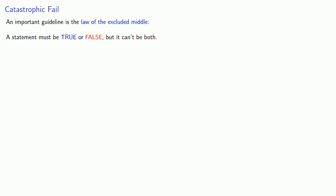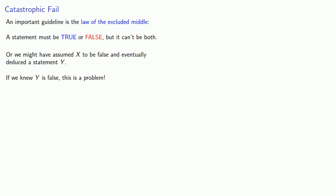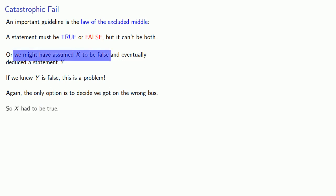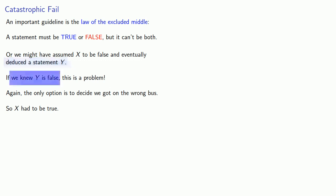Note that we didn't have to assume x to be true. We might have assumed x to be false and eventually deduced a statement y. And again, if we knew y is false, this is a problem. The only option is to decide that we got on the wrong bus. And since the bus we got on was that x is false, it follows that x has to be true. The essential feature is that whatever we assumed, we eventually got to something we knew to be false, which can't happen.